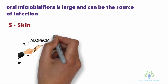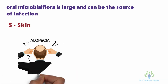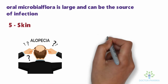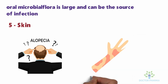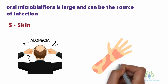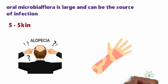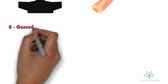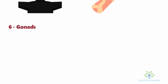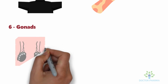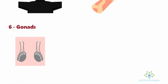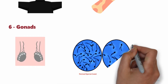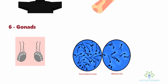The fifth point is toxicity in the skin. Due to destruction of hair follicles, alopecia is one of the common cytotoxic side effects, and dermatitis can also be observed. The sixth point concerns the gonads — inhibition of gonadal cells results in impotence and decreased sperm count, a condition known as oligospermia.